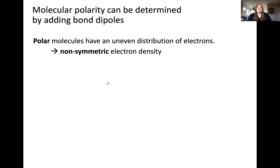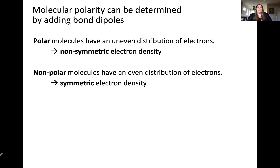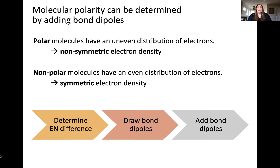We can apply this same reasoning to entire molecules. Polar molecules have an uneven distribution of electrons, meaning the way electrons are distributed amongst the atoms in the molecule is non-symmetric. Conversely, nonpolar molecules have a symmetrical distribution of electrons leading to a symmetrical electron density. To determine whether a molecule will be polar or nonpolar we can apply three steps. The first is to determine the electronegativity difference between all atoms in the molecule to allow us to draw individual bond dipoles.